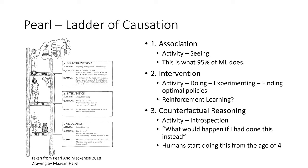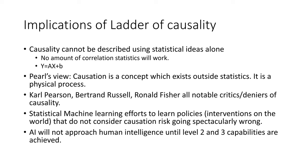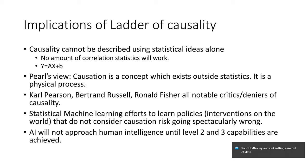A major theme of Pearl's work is that causality cannot be described by statistical ideas alone such as correlation. He gives the example that in linear regression Y = AX + B, the equality sign is reflexive, so changing AX must change Y — but then changing Y must change X. This leads to nonsensical situations. For example, children born between September and December perform academically better — so you could mandate every child be born in that window, which is obviously a nonsensical policy. Pearl's view is that causality is a physical phenomenon that exists outside statistics.